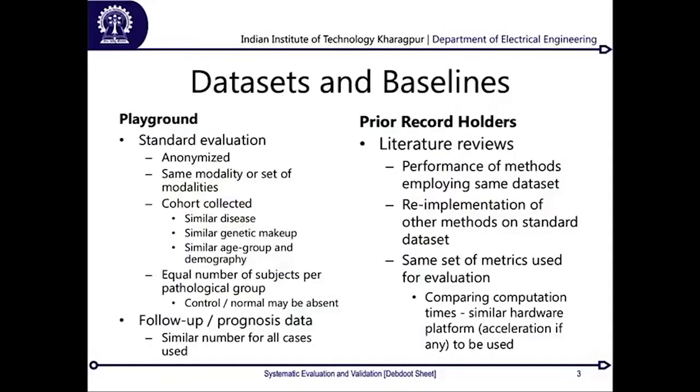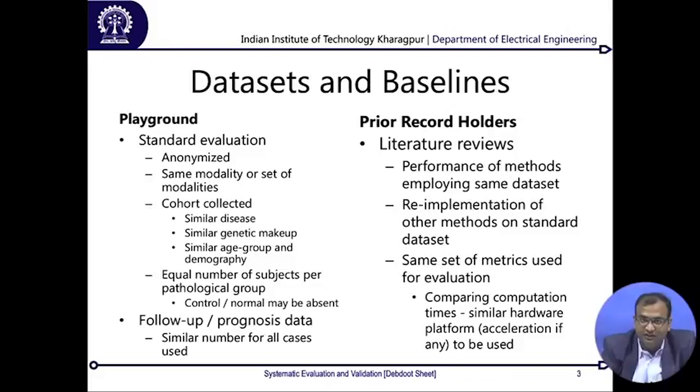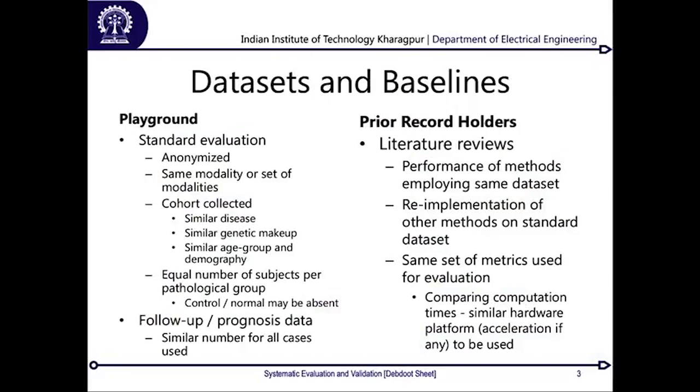You need to have a cohort from which you collect all the data, and this cohort means you need to have a similar set of diseases. If you are quantifying cardiovascular diseases, you need to know that all subjects come with a prior history of cardiovascular problems or are perfectly normal. If you are segmenting a brain lesion but none of your subjects ever had a brain problem where a lesion would form, then your cohort is actually flawed and you cannot use that data.